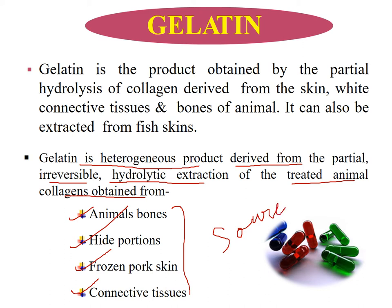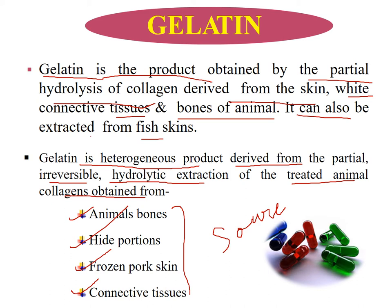Now, let's look at the definition once more. Gelatin is a product obtained by the partial hydrolysis of collagen, derived from the skin, white connective tissue, and bone of animals. It can also be extracted from fish skin. These are the sources and the definition of gelatin.